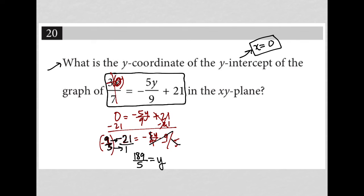I cannot simplify that. 5 does not go into 189. There's no common factor here between 189 and 5. So that's it. That is my answer. y is equal to 189 fifths. 189 divided by 5 is our answer here.